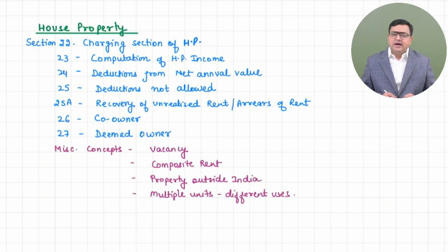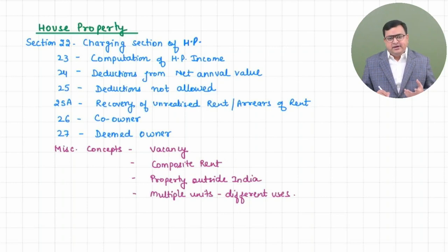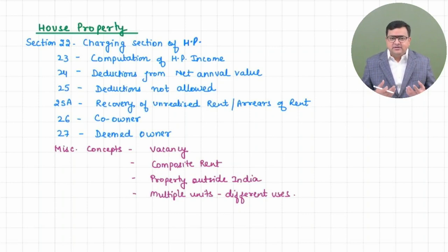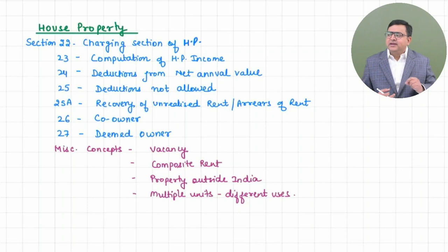These are the contents of this chapter. There are also miscellaneous provisions like vacancy — if the house is vacant at any time during the year, how you will treat that vacancy period. Another concept is composite rent — whenever you let out your building with some extra services or extra assets and the tenant gives you a lump sum rent including your building as well as other assets or services, that is composite rent.